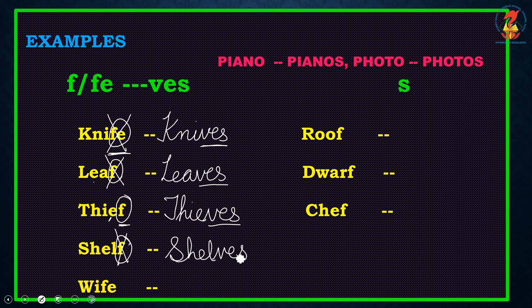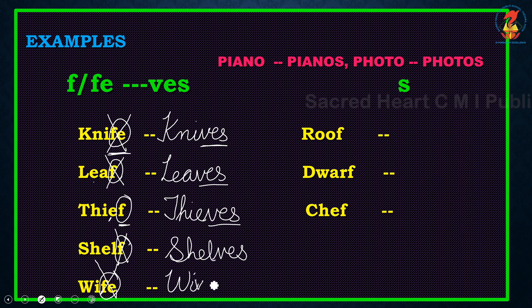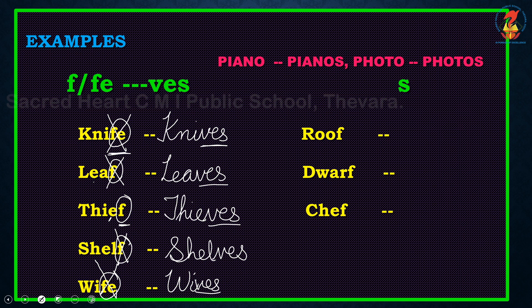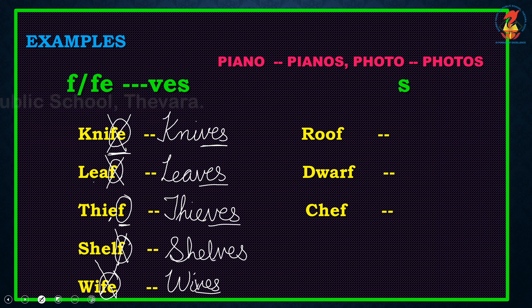We learnt in the last class: when you have a word ending with SH, what do you do to make it plural? You just add ES to it. So brush has become brushes. Now for words ending with CH — bench is ending with CH, so we added ES to make it plural. We didn't change anything, just added it. For the word ending with X — fox — we just added ES to it to make it foxes.